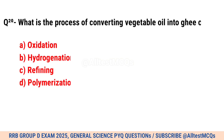Question No. 20. What is the process of converting vegetable oil into ghee called? Correct option is B. Hydrogenation.